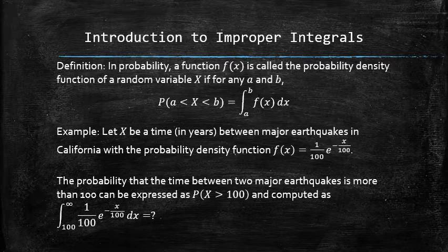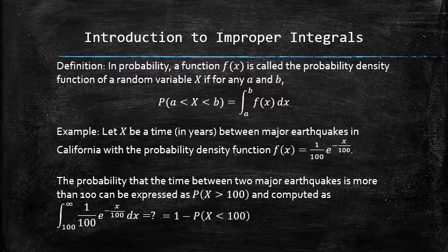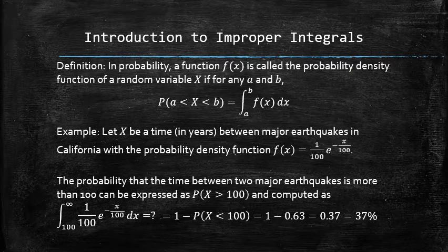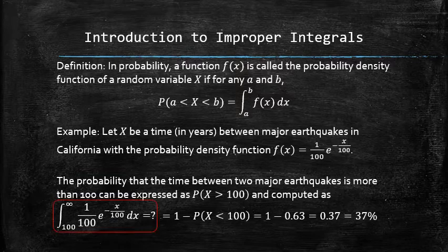While symbolically this expression makes sense, numerically we have a problem because infinity is not a number. The following fact provides the light at the end of the tunnel. Using the complementary rule, we know that the integral must be equal to 37%, so the goal is to develop mathematical tools to treat the integrals such as this one.